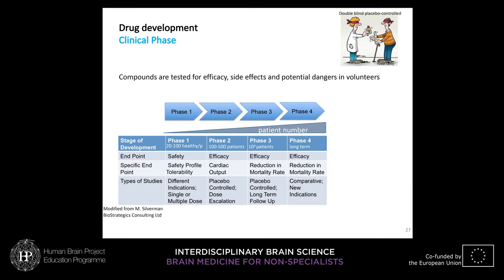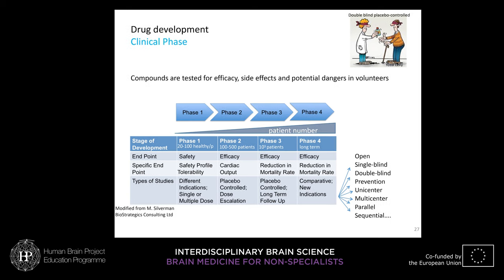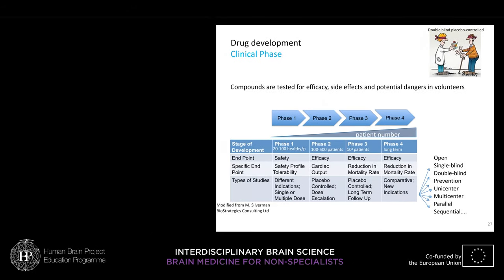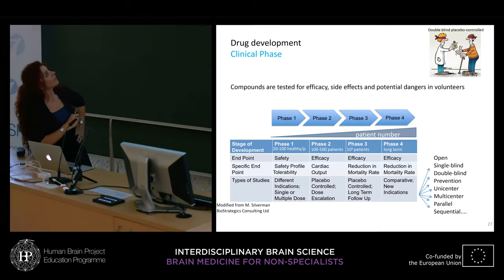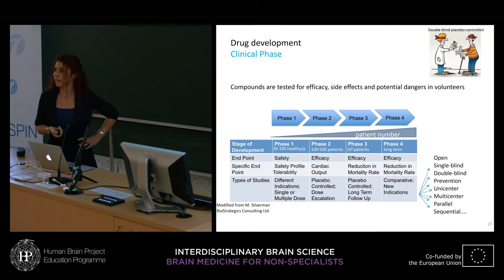The clinical phase is the most costly part of drug development, mainly because patient numbers increase toward the end. Each phase is defined by an endpoint: Phase 1 focuses on safety, Phases 2 and 3 focus on efficacy, and Phase 4 on long-term efficacy. Specific endpoints depend on the drug being studied — for example, cardiac output for a heart drug. There are different study types including open, single-blinded, and double-blinded designs. Once a drug successfully completes this process, it is finally marketed.